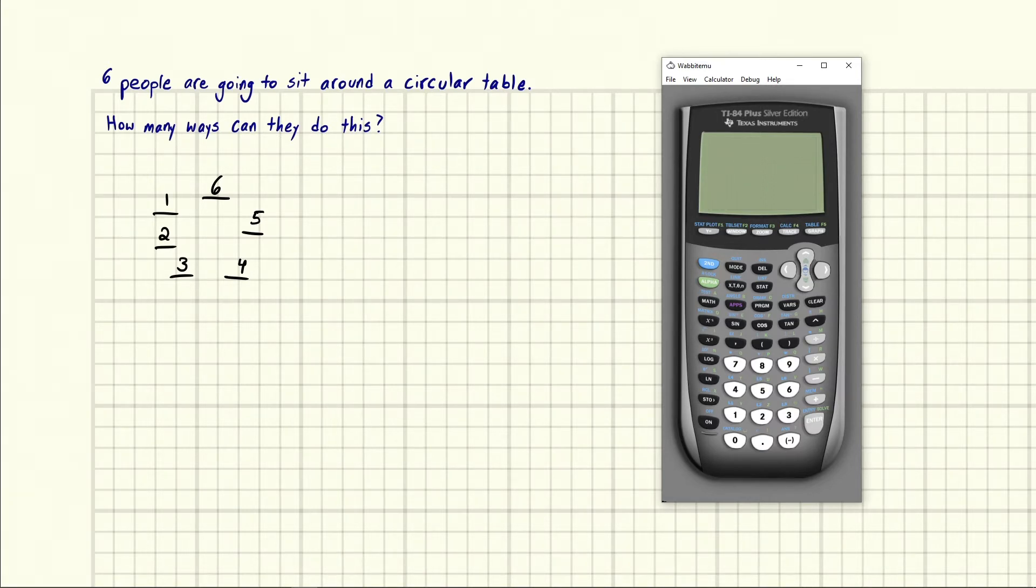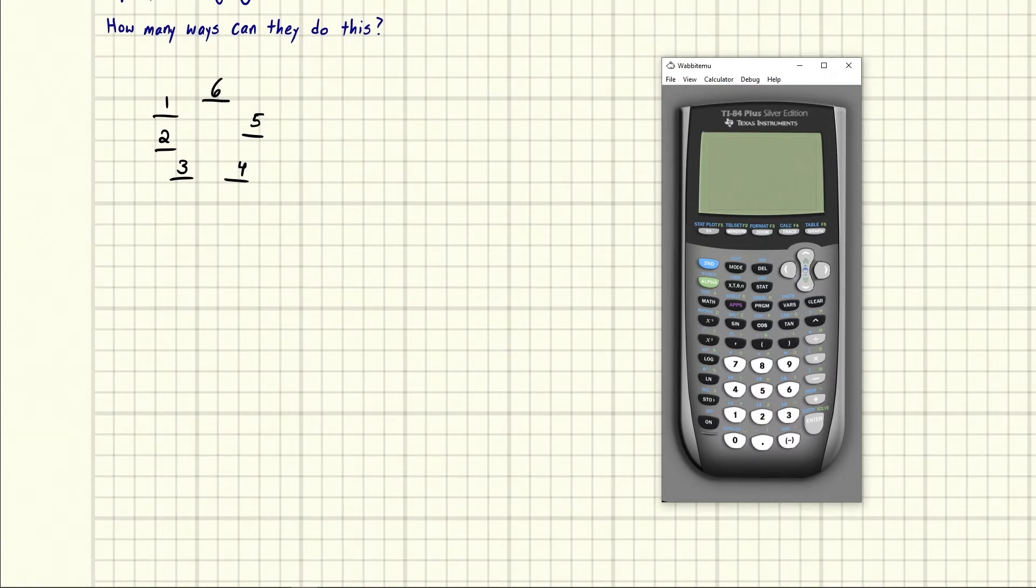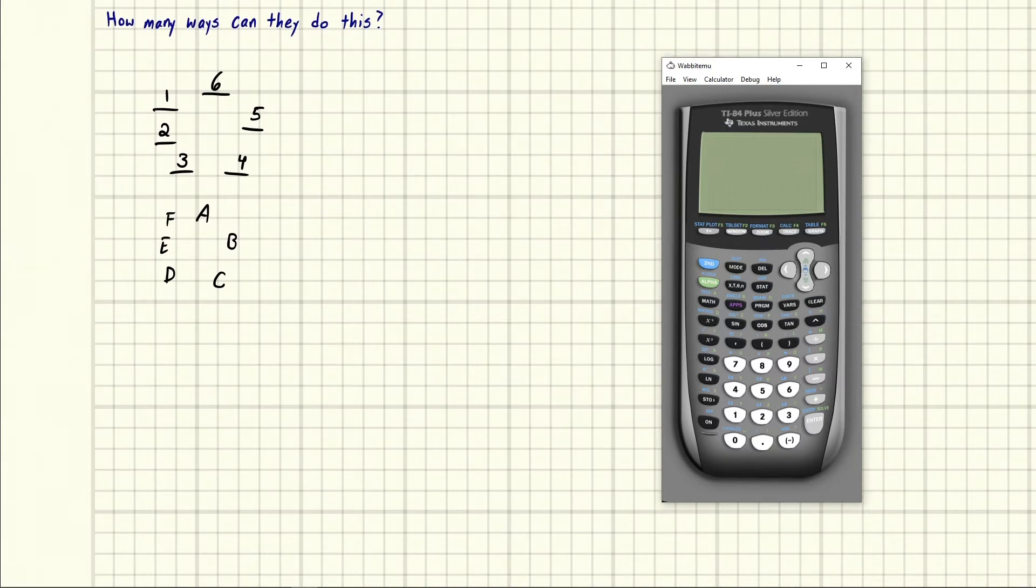Let's just take a quick example of what one arrangement could be. Let's say that every person is just a letter. So we have A, B, C, D, E, F. Now let's say, okay, so this is one of the ways.